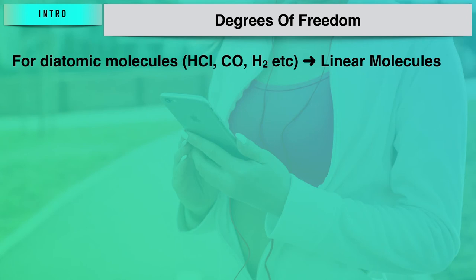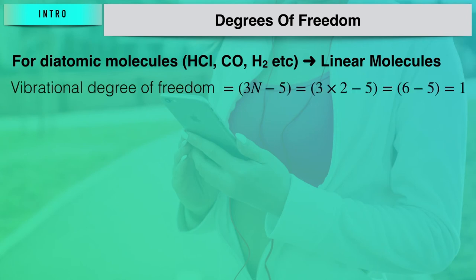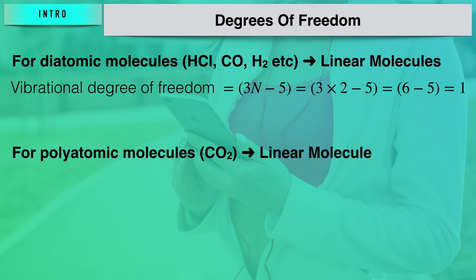A diatomic molecule is always linear, like HCl or carbon monoxide. The vibrational degrees of freedom can be found by applying the formula 3n minus 5, where n is the number of atoms in the molecule. For HCl, there are two atoms, so n equals 2, giving 3 times 2 minus 5 equals 1. So a diatomic molecule has only 1 vibrational degree of freedom.